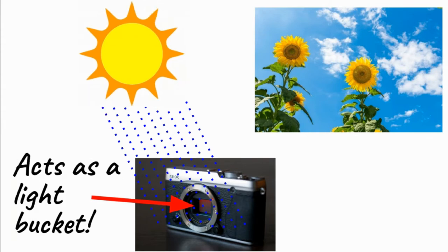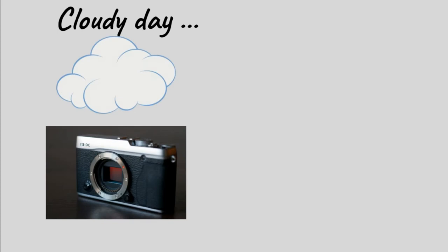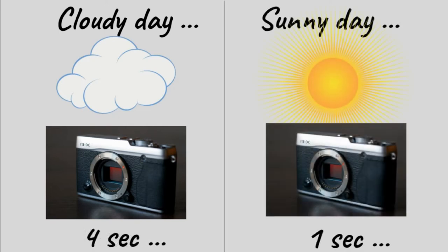So back to your camera acting as a light bucket, it pretty much works the same way. We try to reach a certain exposure level, or you may call it brightness level. For example, on a cloudy day, it might take you four seconds of shutter speed to reach a certain exposure level, whereas on a sunny day, when it's much brighter, only a second.